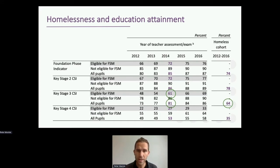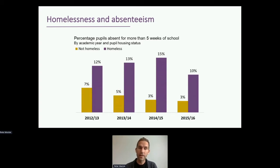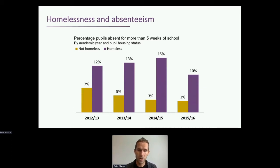What this tells us is that after an episode of homelessness, children in homeless families have worse attainment than the average pupil. We haven't yet controlled for income and other factors, and believe it or not, in the homelessness data we don't record the children — so it was a big statistical job to find them in these households. The second slide is perhaps more telling: it looks at absenteeism. In 2014–15, a child in a homeless household is five times more likely to be absent from school for more than five weeks than children in families that didn't become homeless.